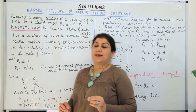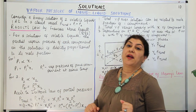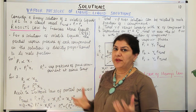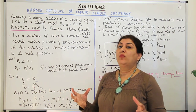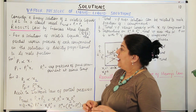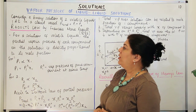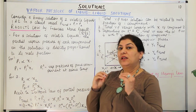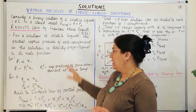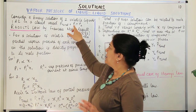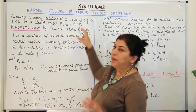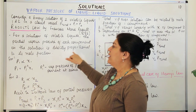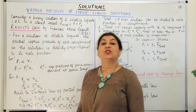A French scientist, François-Marie Raoult, in 1886 studied these binary solutions of liquids and gave his law, known as Raoult's law. The statement of Raoult's law is: for a solution of volatile liquids, the partial vapor pressure of each component in the solution is directly proportional to its mole fraction. The total vapor pressure is the sum of the partial pressures of each component.